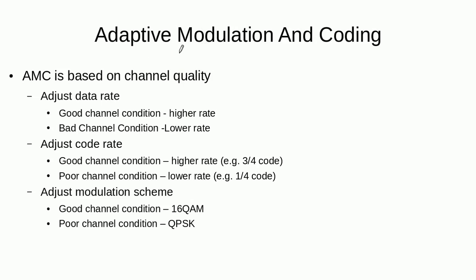Now we come to adaptive modulation and coding. The purpose of adaptive modulation and coding is to increase the data rate of mobiles that are in good channel conditions. For mobiles that are already getting more CDMA codes, we want to further increase their data rate, and this is achieved using adaptive modulation and coding.